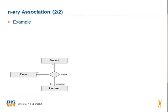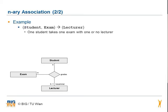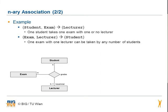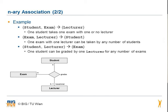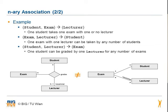Exam can have many students and has no or one lecturer with the public role examiner. There are three different possible interpretations of the ternary association: one student takes one exam with one or no lecturer; one exam with one lecturer can be taken by any number of students; or one student can be graded by one lecturer for any number of exams. Note that in the ternary example, a lecturer cannot have any direct association with a student because an exam is needed.